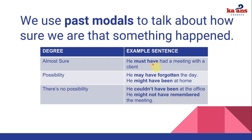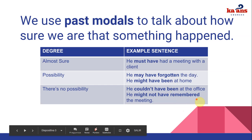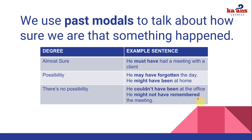We need to use the past participle of the verb. For example: had, forgotten, been, remembered. Remember that for regular verbs — verbs that end in -ed — the simple past form and the past participle form are the same.